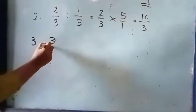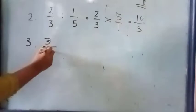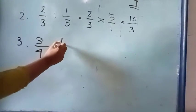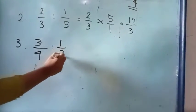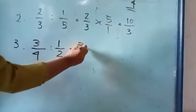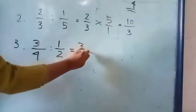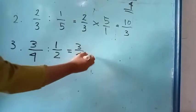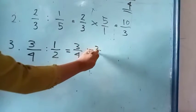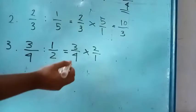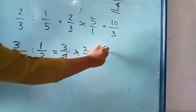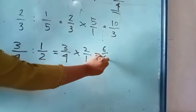Untuk contoh yang selanjutnya, yaitu 3/4 dibagi dengan 1/2. Seperti contoh yang pertama, dengan menggunakan metode silang, yaitu penyebut dipindahkan ke atas. Penyebut di situ menjadi 2/1, sama dengan 6/4.